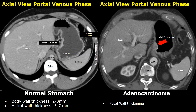Gastric adenocarcinoma is a common type of stomach cancer and its features on a CT scan can be quite varied. Increased wall thickness of the stomach can occur; the wall thickness can be focal, segmental, or diffuse. If the wall thickness is greater than three millimeters in the body, it suggests pathology. In this case there is a focal wall thickening which raised suspicion for adenocarcinoma, and after further investigation it was found to be early stage adenocarcinoma.